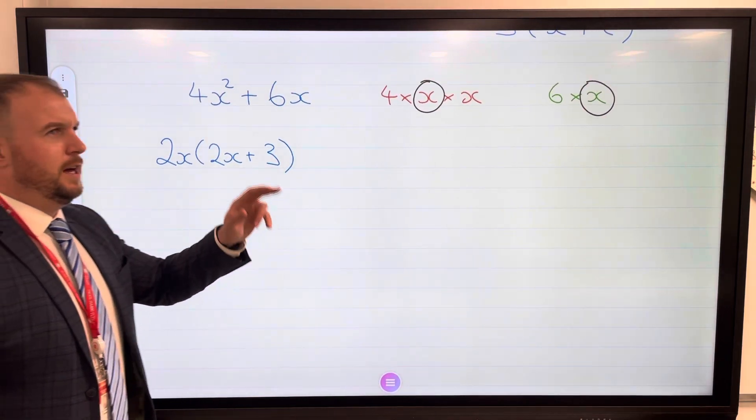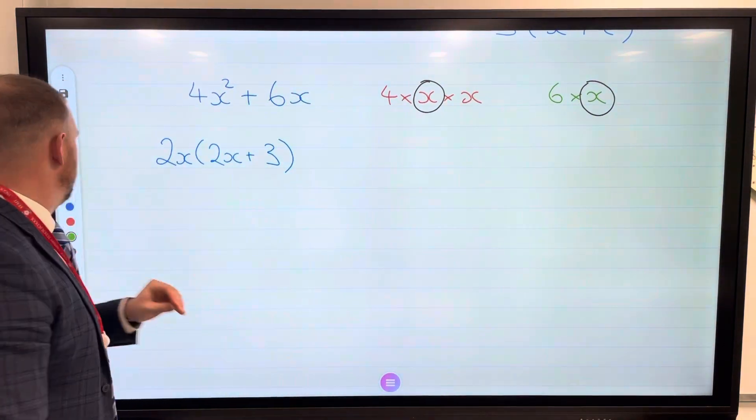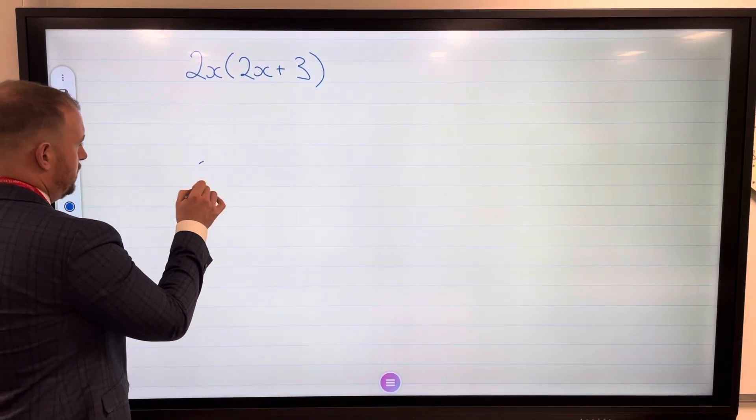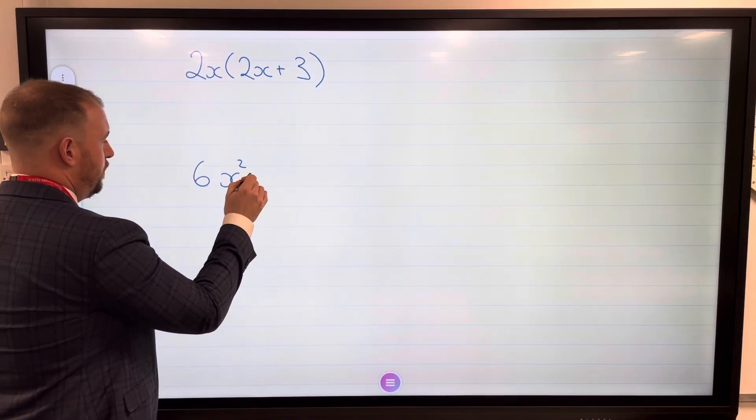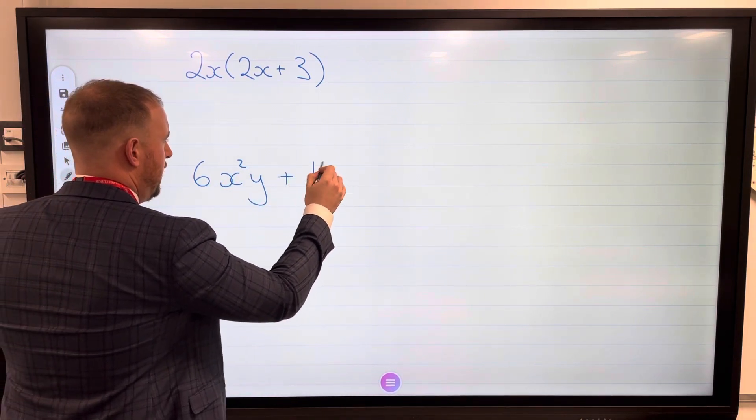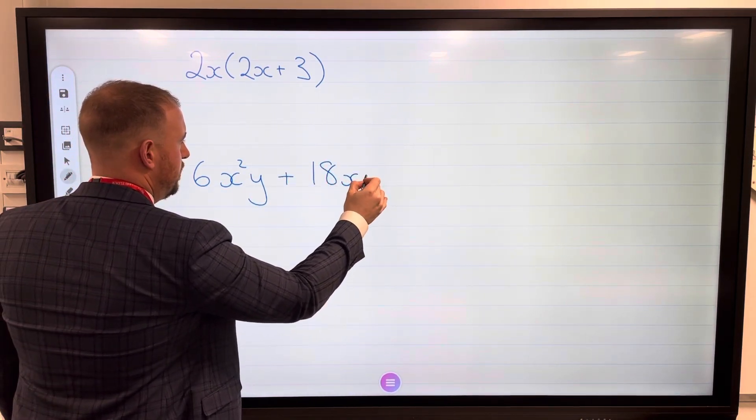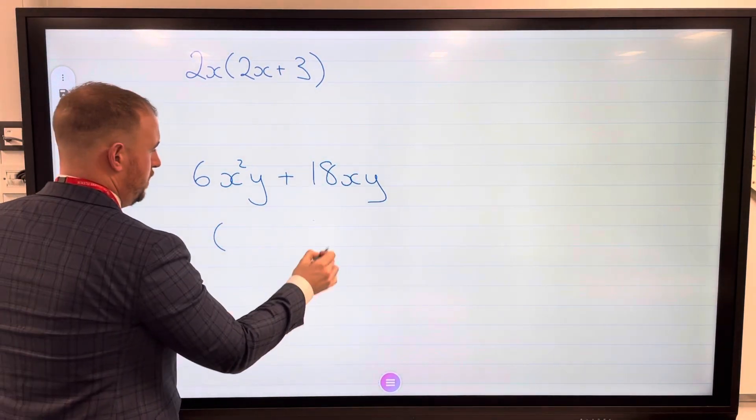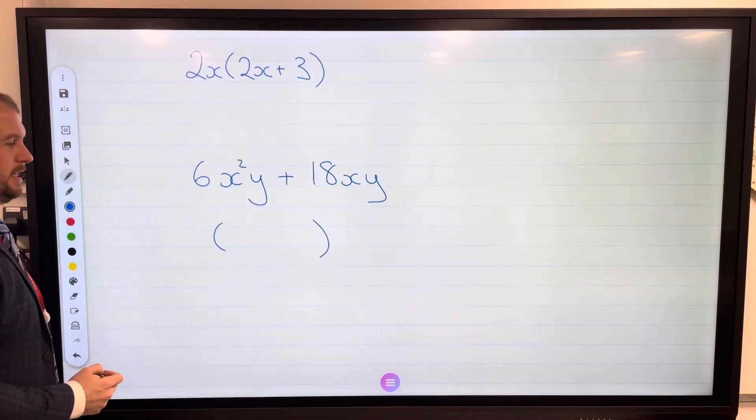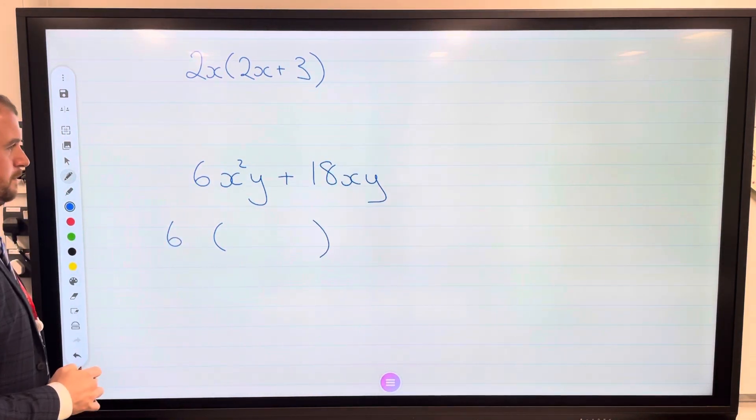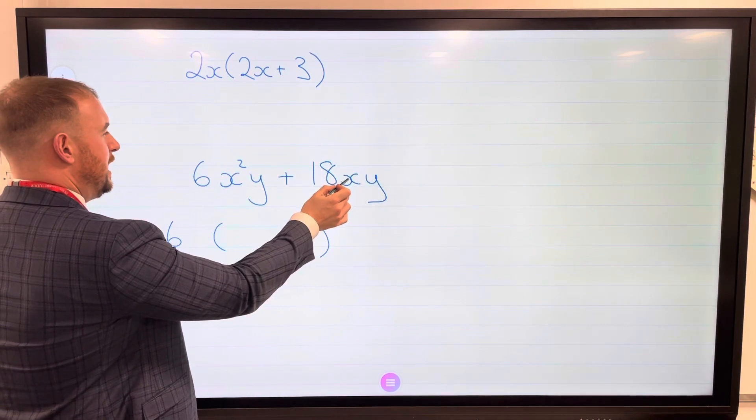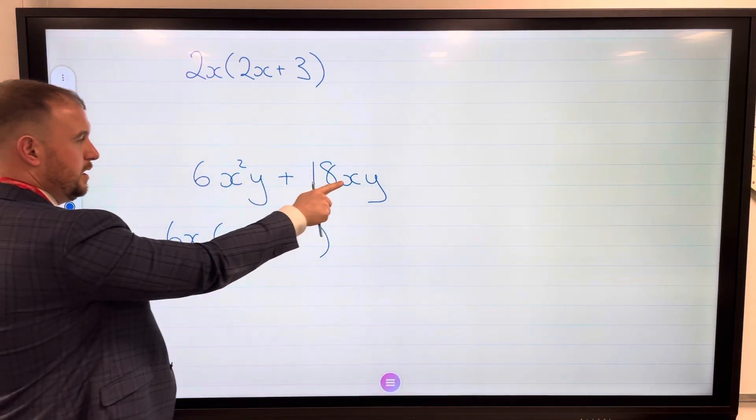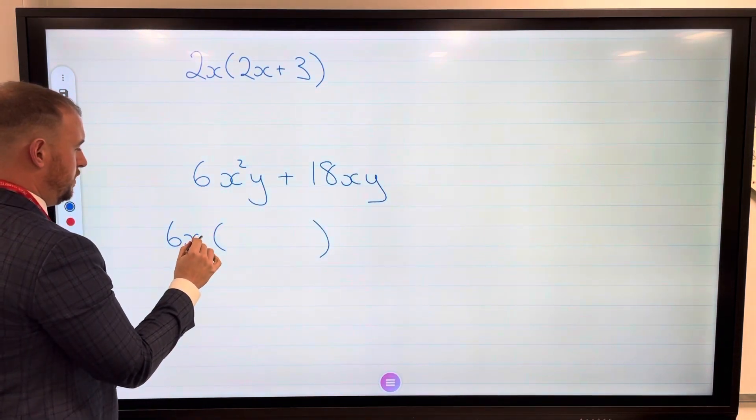How about if we have different letters in both? How about if we had 6x²y plus 18xy? Let's look at the numbers first: what's the highest common factor of 6 and 18? Well that has to be 6. I've got x² here and an x here, so that means I've got an x in both, not x² because this one's not squared. I've also got a y in both, so that is common, so that must go on the outside.